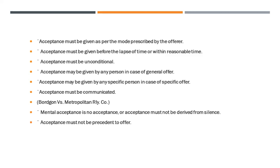Acceptance must be communicated — it has to be communicated clearly, with whatever clauses are there. Silence cannot be accepted. Mental acceptance is no acceptance; acceptance must not be derived from silence. If B thinks on his own mind that he will accept the offer, that is not acceptable — it has to be communicated to A. Any acceptance from silence cannot be taken as valid for a contract.